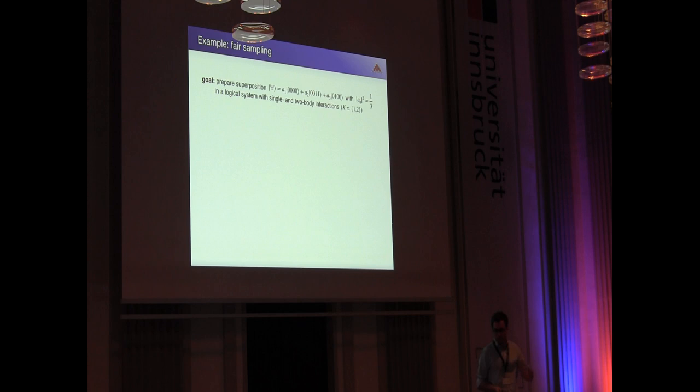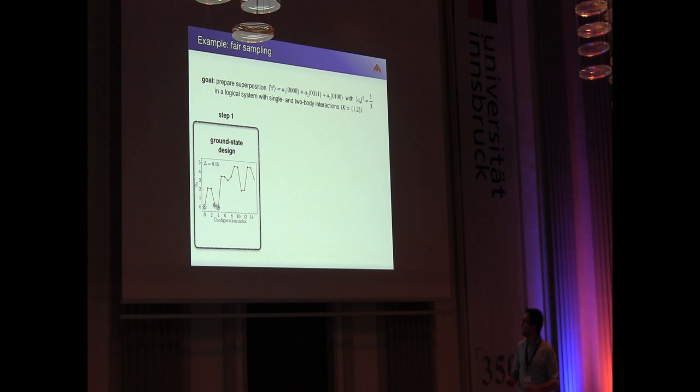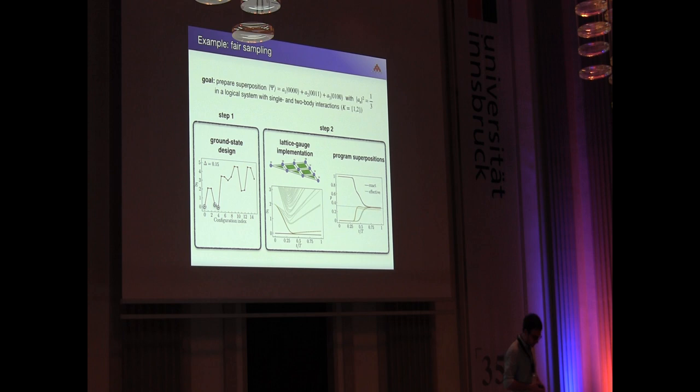Let me wrap up with a small example. My goal is to create a superposition, a particular superposition like this, where I want the squared amplitude to be one third, which would be actually a fair sampling example. And I want a logical system with single and two body interaction. Step one would be this ground state design. Then I have to translate that into this lattice gauge model I explained to you before. And then I have to tweak the CPs such that in the end I get the desired probability out. Just a note: in the new paper, we also included the Schieffer-Wolf theory for non-perfect degenerate ground states, which turned out to work also quite good.